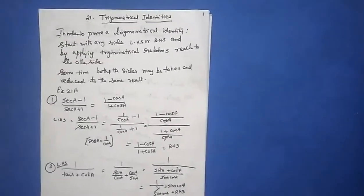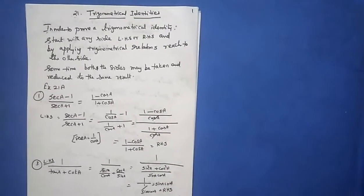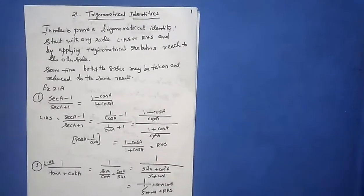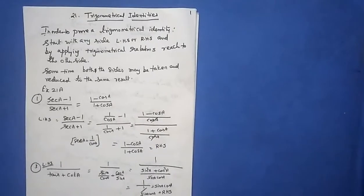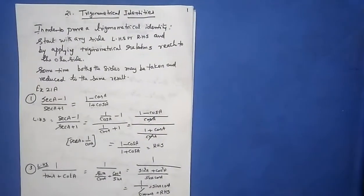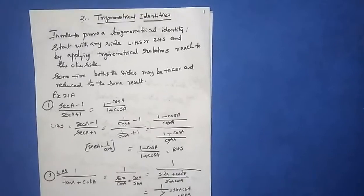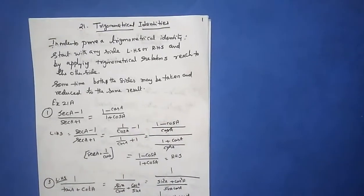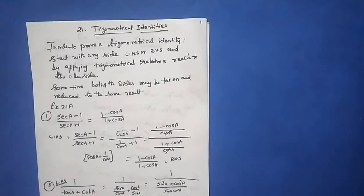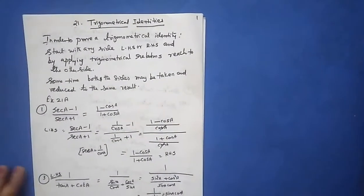You should know the trigonometrical identities: sin²θ + cos²θ = 1. From that you derive the other two: 1 + tan²θ = sec²θ, and 1 + cot²θ = cosec²θ. You must use these in the proper place.